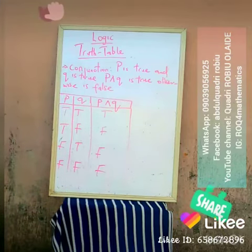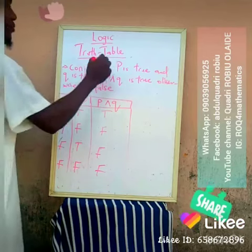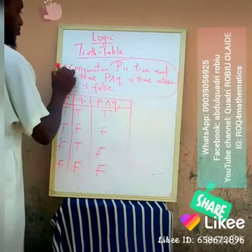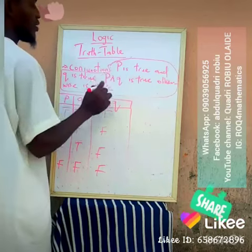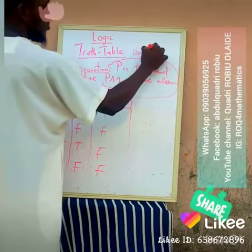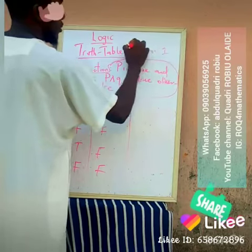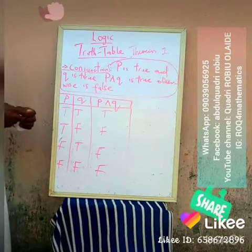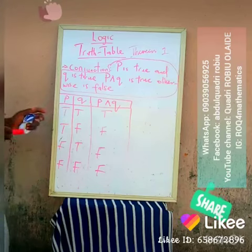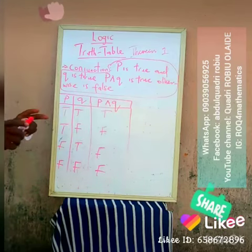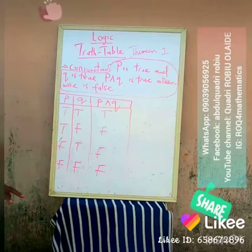What we are actually saying is: if you look at this conjunction theorem — this is Theorem 1. It is telling us that if your P and Q are both true, then P AND Q is going to be true. In any other case, it's going to be false. That's it.